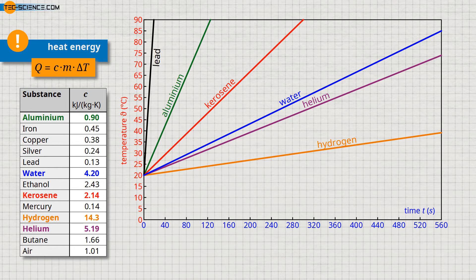Apart from the gases helium and hydrogen, liquid water has a very high specific heat capacity compared to other substances. Heating or cooling water therefore generally requires a relatively large amount of energy to be supplied or removed. However, this does not always have to be a disadvantage because, conversely, this ultimately also means that water only reacts to a heat supply or heat removal with a relatively small change in temperature.